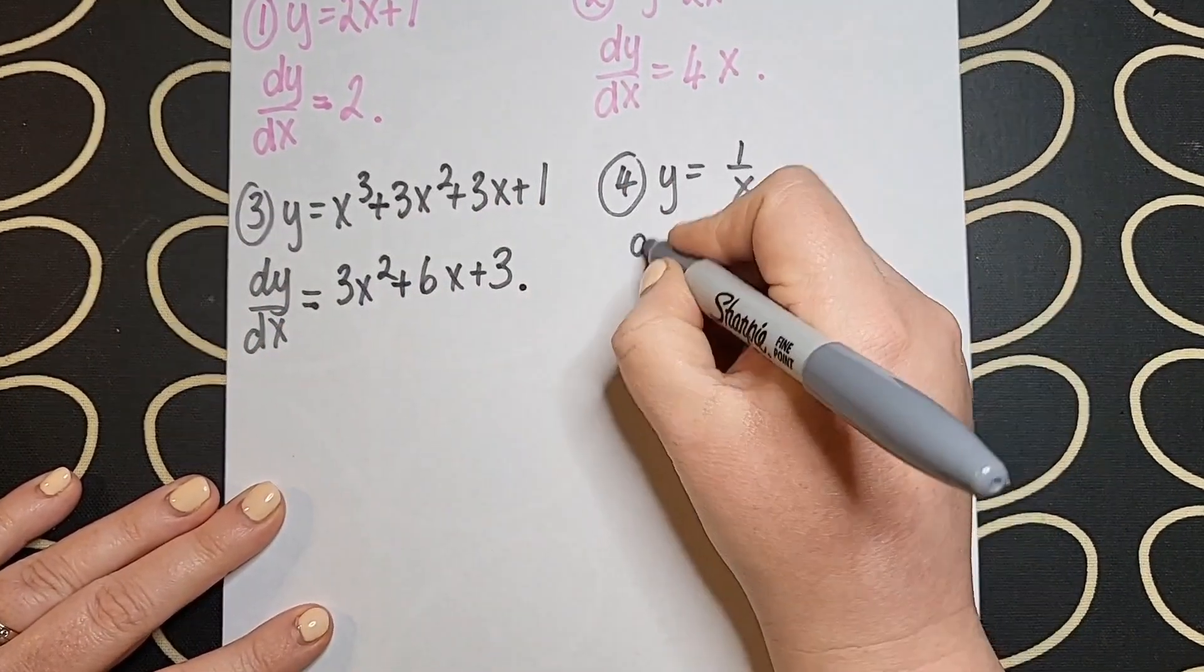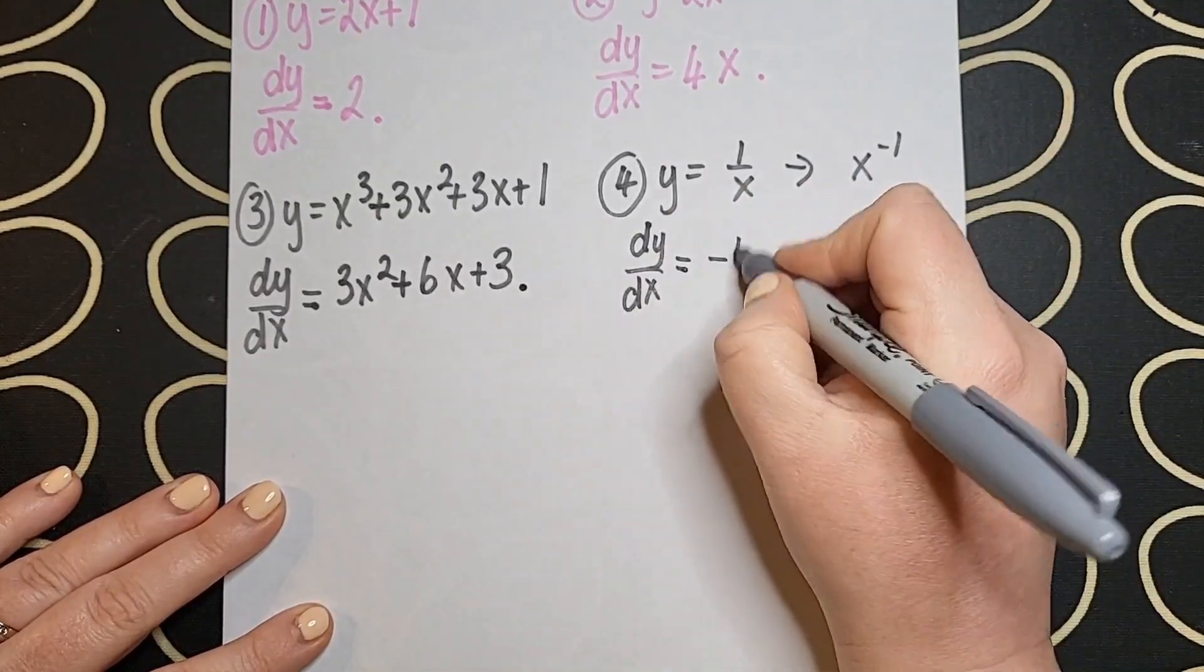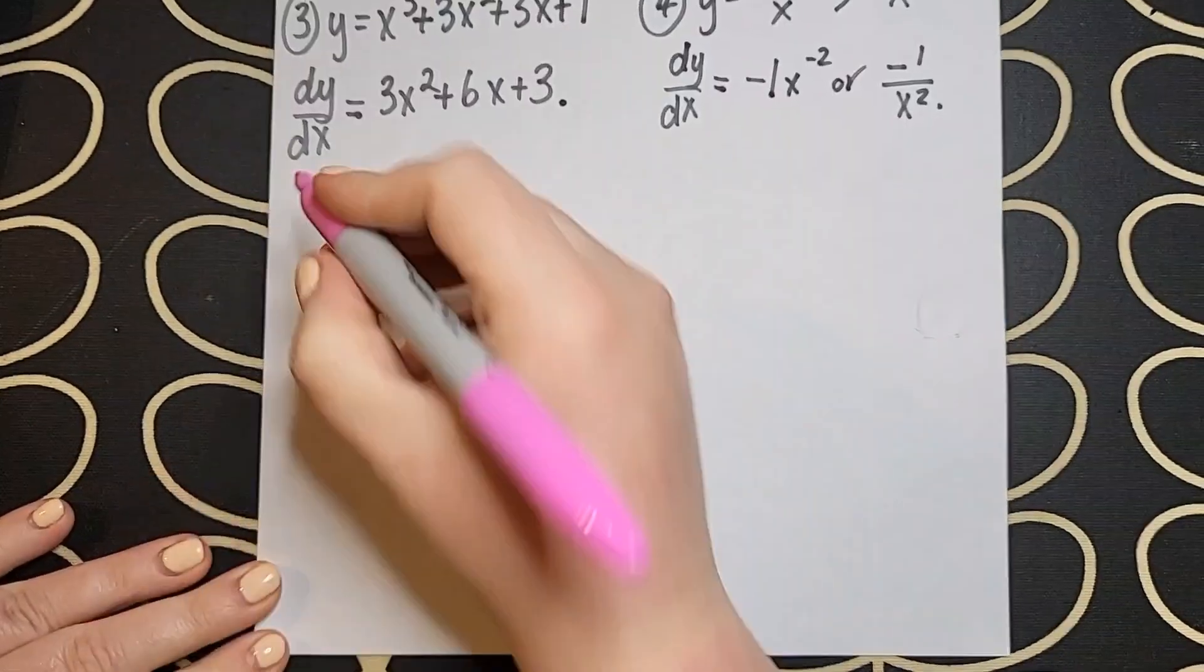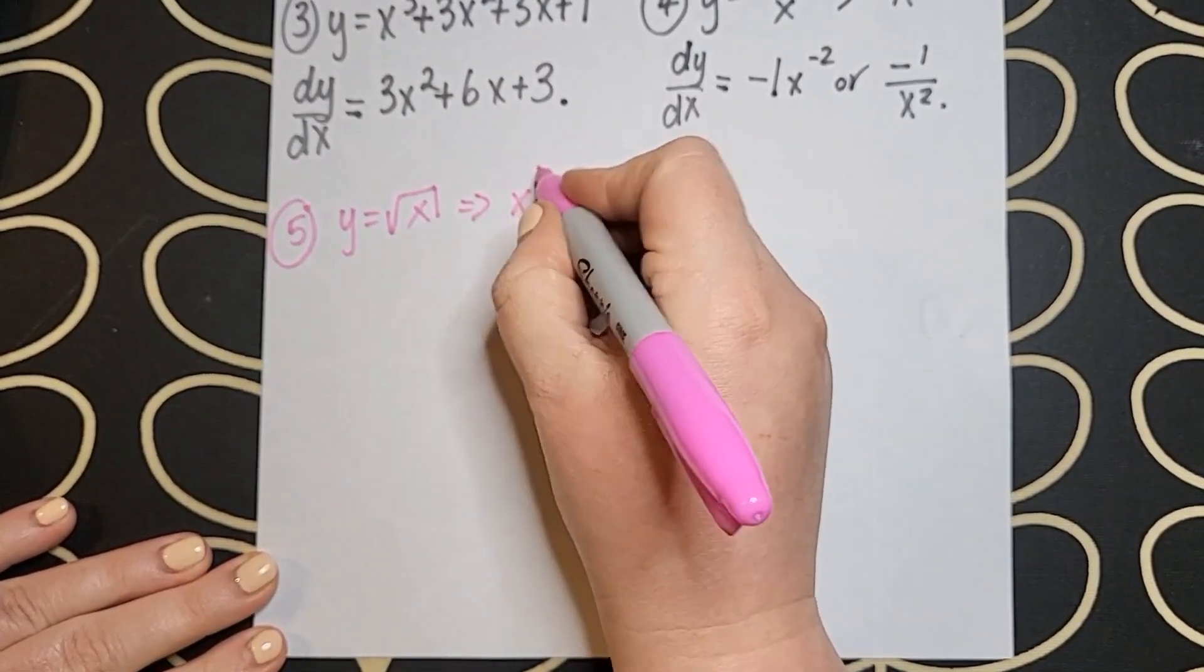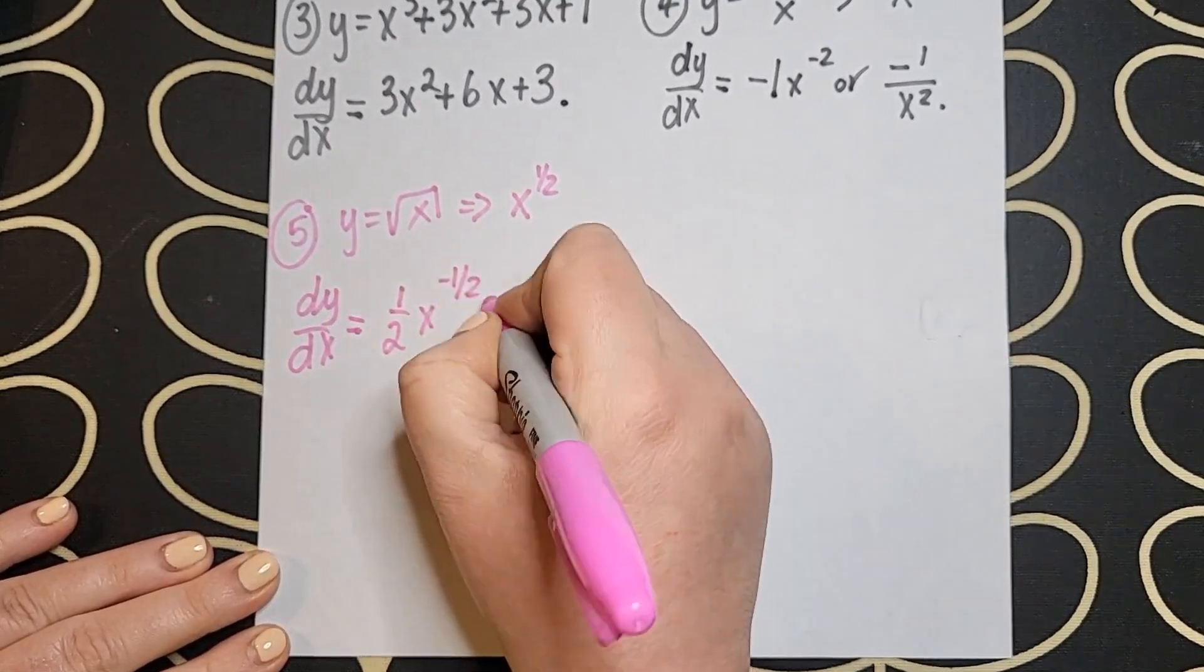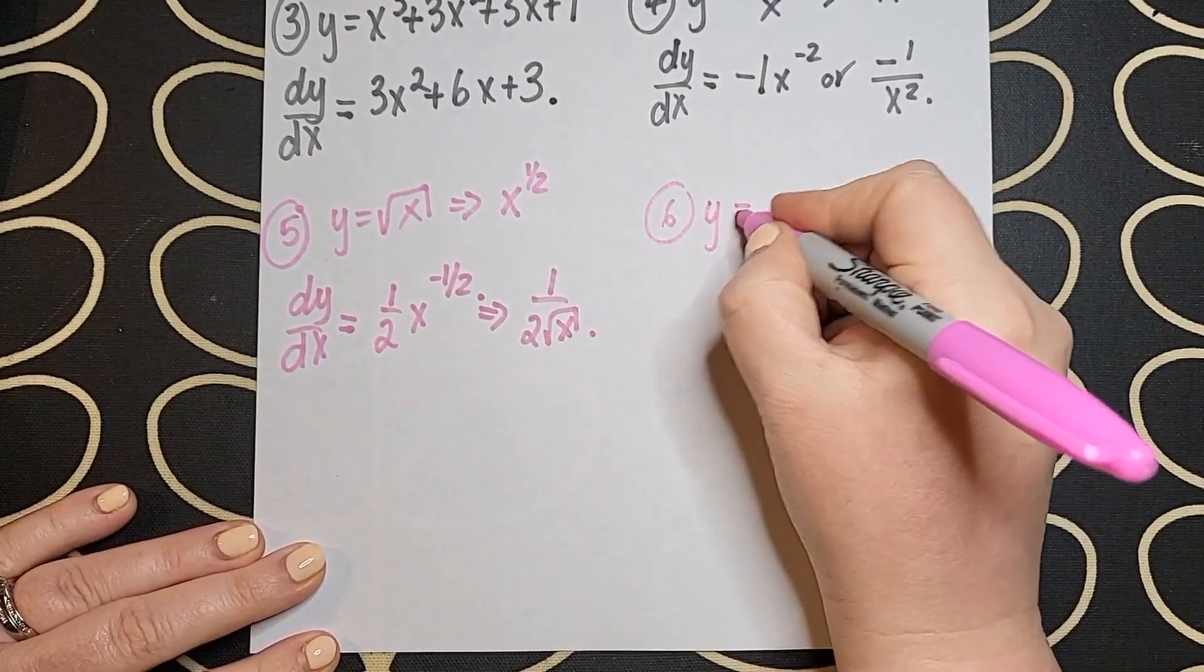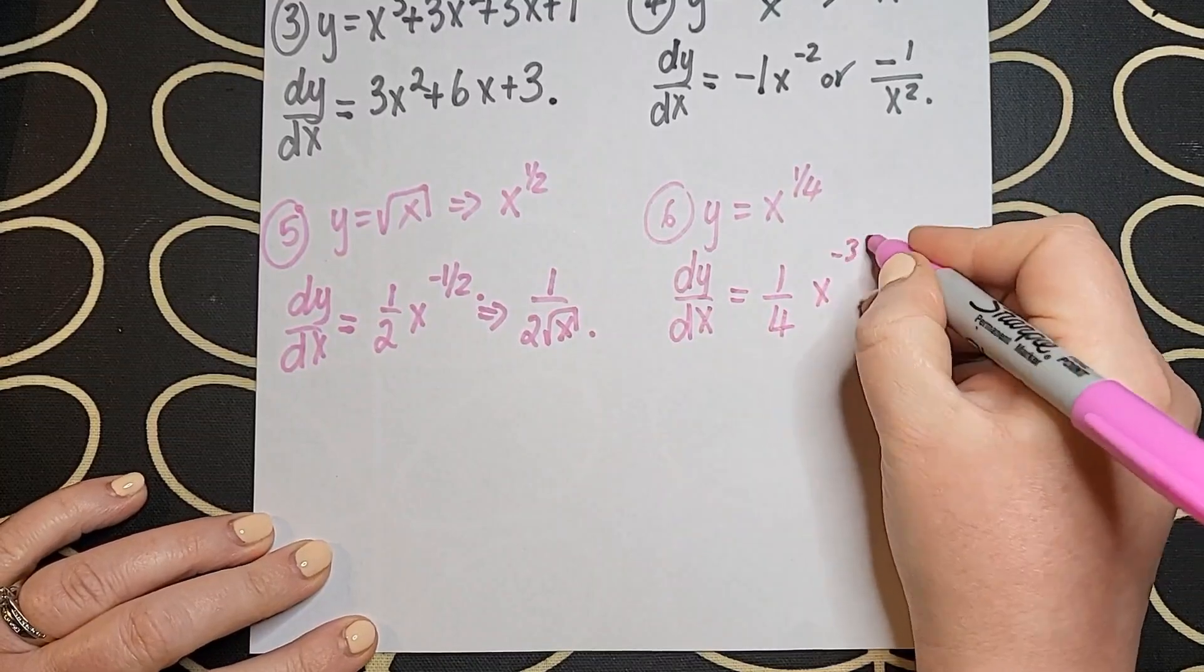The first thing I want to draw your attention to here is on question four where we have one over x. I'm going to use my rules of indices to bring that x up to the top of the line and it turns into an x to the power of minus one. Likewise with question five I've got the square root of x. I don't differentiate thirds, I differentiate with powers. So I'm going to rewrite that as x to the power of a half and then use my normal straightforward differentiation rule.